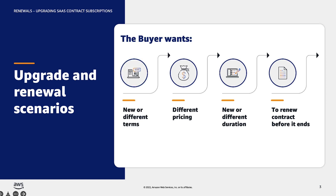First, a buyer may require an upgrade or renewal when they would like new or different terms than their current terms. Next, a buyer may want a different price for each dimension or instance type that they are subscribed to. The buyer would like a new or different duration, or the buyer would like to renew their contract before the existing contract ends.